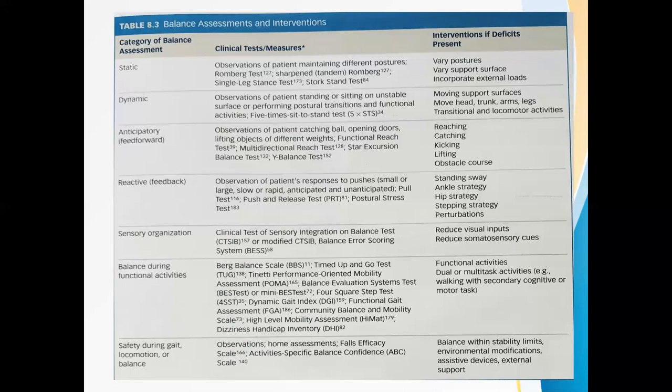Then is anticipatory balance control test. In this the patient performs voluntary movements that require the development of a postural set to counteract a predicted postural disturbance — like the patient's ability to catch balls, open doors, or lift objects without losing balance. This involves anticipatory or feed-forward control. The test involved is the FRT — functional reach test — or the multi-directional reach test.